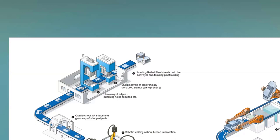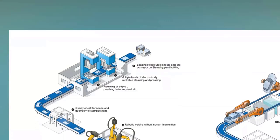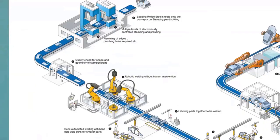This stage is totally electronically controlled and computerized. Once stamping is done, you get the required shape but with sharp edges. At this stage you roll out the sharp edges — this process is called hemming. There is also minor punching of holes as required. Once the edges are smooth and the steel sheets are converted to the required shapes — doors or other car parts — there is a quality control check. This is the end of the stamping line.